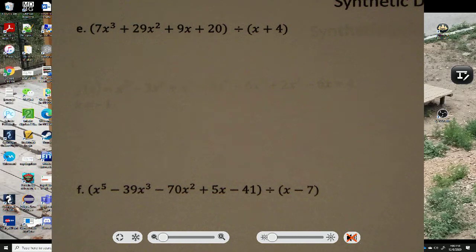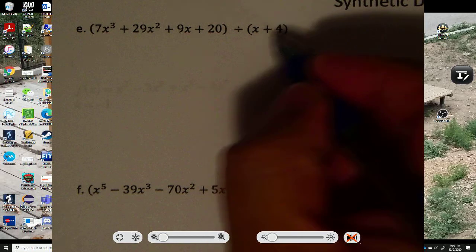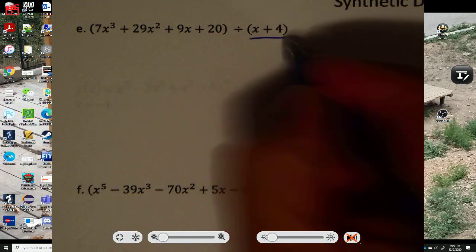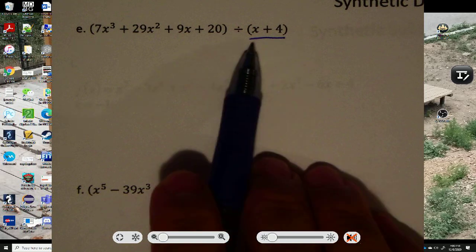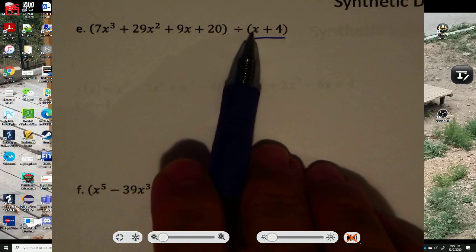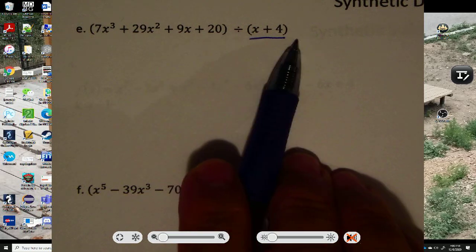This is synthetic division. These are the notes on synthetic division. Alright, now synthetic division can only be used when you're dividing by a linear binomial. Remember, linear means the highest exponent is 1, and it's a binomial. It's two terms.